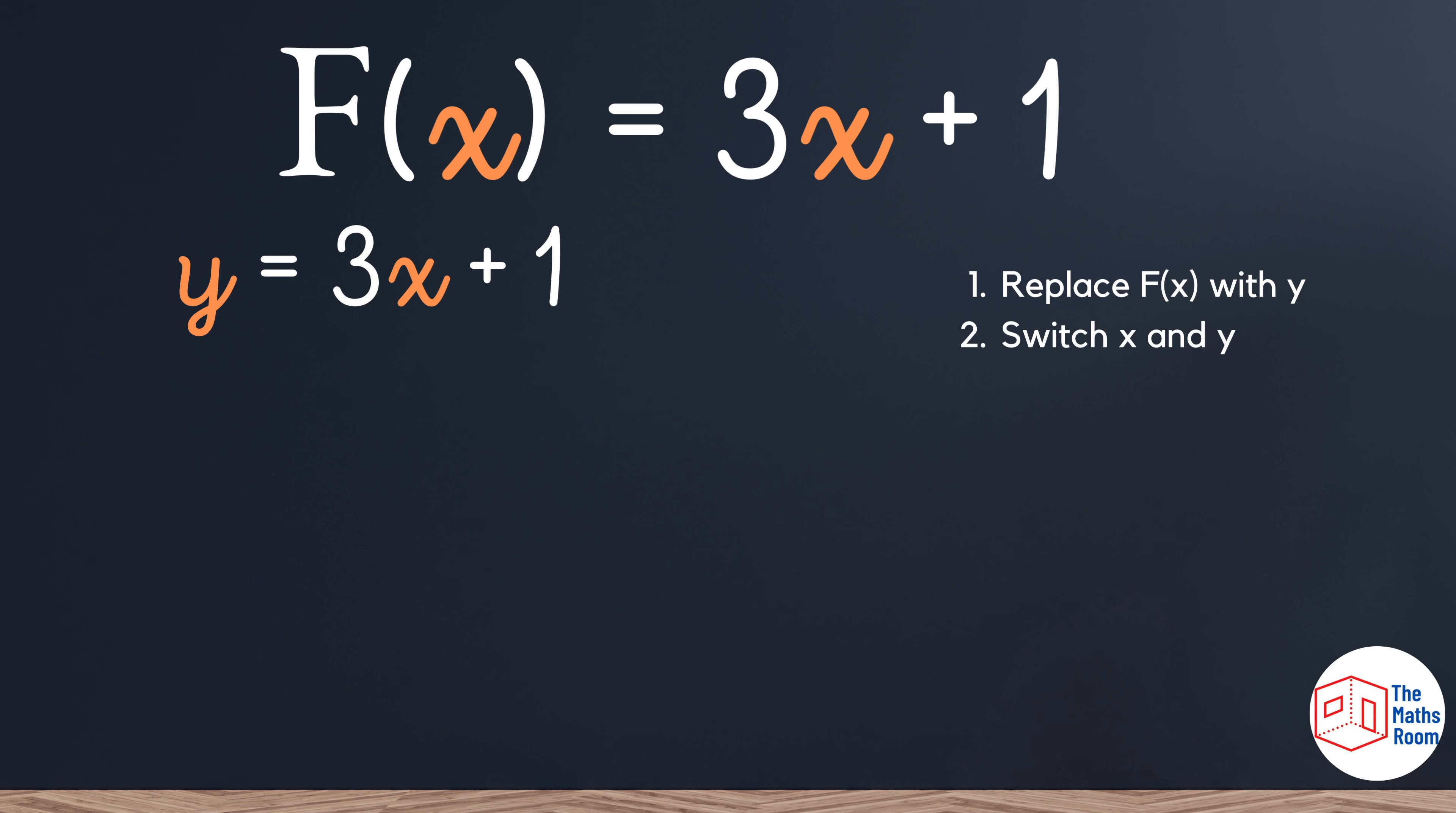Next we are going to take the x and the y and switch them. So wherever you see an x you'll replace it with y and wherever you see a y you'll replace it with an x. So your equation now looks like that. Your next step is then just to rearrange the formula so that y is once again the subject which means y equals something else.